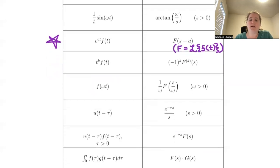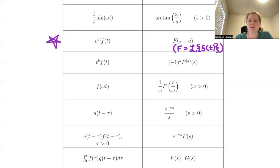If we multiply by a power of t — t to the k — times f of t, it shows up as negative one to the k times the kth derivative of our Laplace transform. Again, capital F is the Laplace transform of lowercase f of t. So if we have t to the k times any function whose Laplace transform we know, we now know how to find the Laplace transform of t to the k times that function.